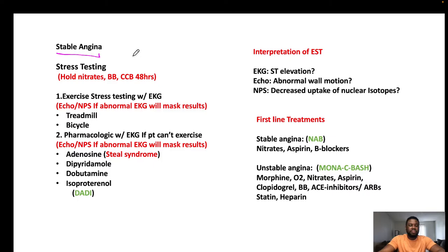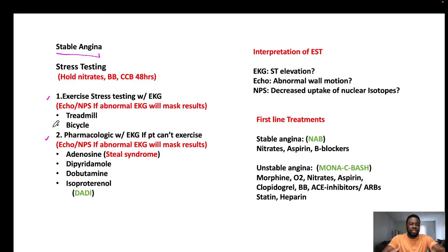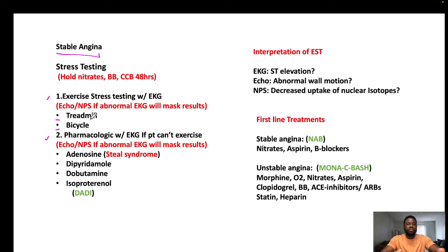For stable angina management, we do a stress test — either an exercise stress test or a pharmacologic stress test. The goal is to induce ischemia to see if the patient is at risk of MI. For exercise stress testing, we place EKG electrodes on the chest while the patient runs on a treadmill or rides a bicycle, and monitor for EKG changes.